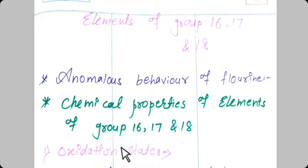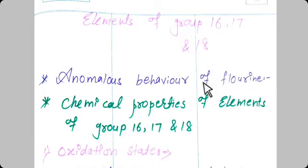Hello students, let's continue the chapter on elements of group 16, 17, and 18. Today's first topic is anomalous behavior of fluorine. Anomalous behavior means atoms in the same group having different properties. Fluorine is the first member of group 17 and differs in properties from the other members of the group.